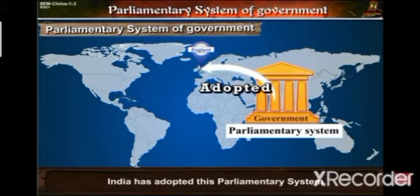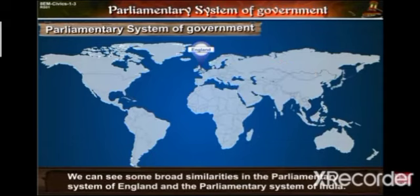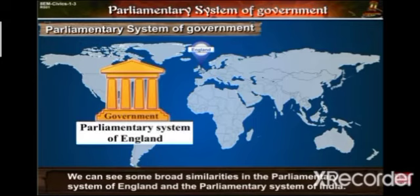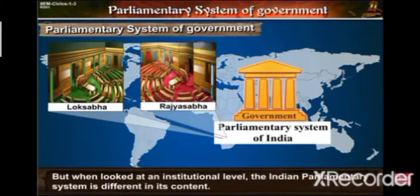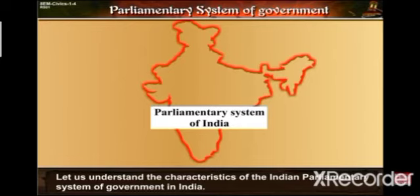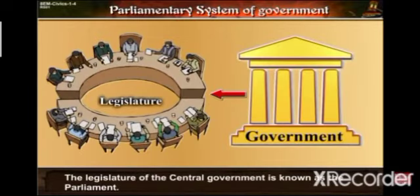India has adopted this parliamentary system. We can see some broad similarities in the parliamentary system of England and the parliamentary system of India, but when looked at an institutional level, the Indian Parliament system is different in its content. In the Indian Parliament we have the Lok Sabha and the Rajya Sabha. In India, the parliamentary system is a system of governance, and the legislature of the central government is known as the Parliament.